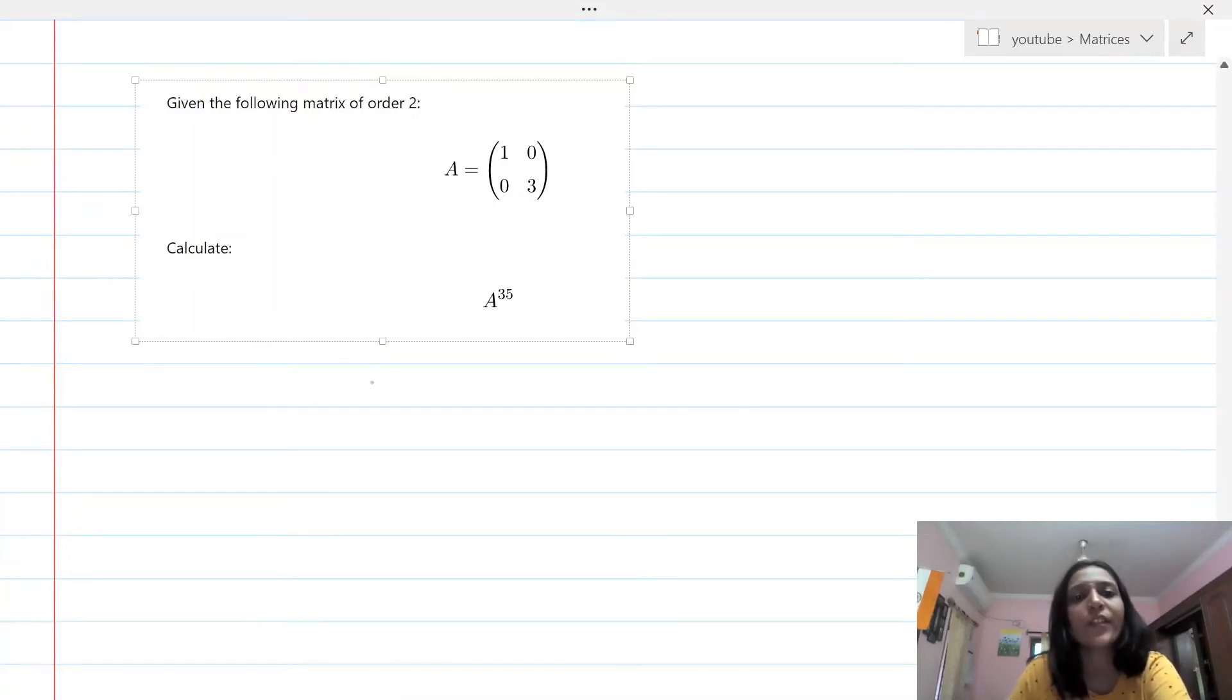Hello everyone, today's video is going to be based on a request made by a fellow subscriber. In this video, we are going to find the value of A to the power 35 for this given matrix [1 0; 0 3]. The first thing we always want to do is figure out a pattern.